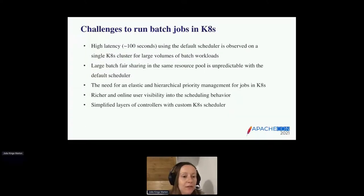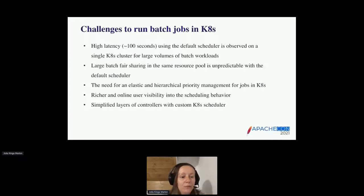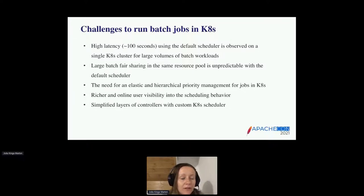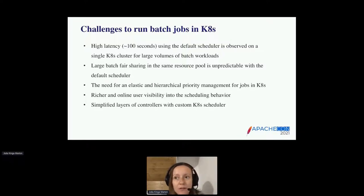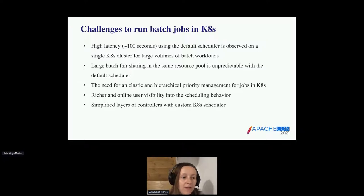Here are the challenges we encountered when we wanted to run batch jobs in Kubernetes. We found there was high latency — around 100 seconds while using the default scheduler on a single-node Kubernetes cluster. In case of larger volumes or bigger load, fair sharing was also a problem — large batch jobs sharing the same resource pool was unpredictable using the default scheduler. We also faced the need for elastic and hierarchical priority management for jobs in Kubernetes, and richer online user visibility into the internals of the scheduling behavior.